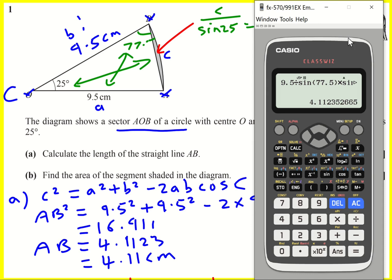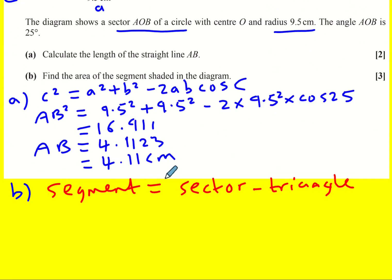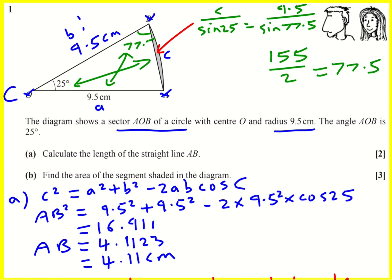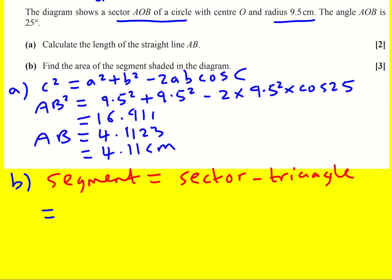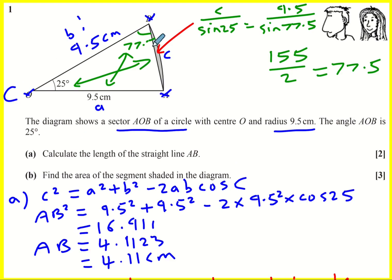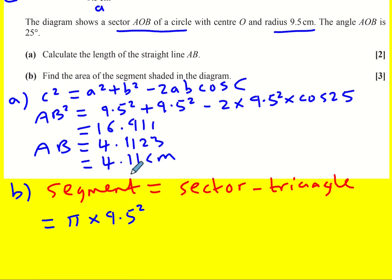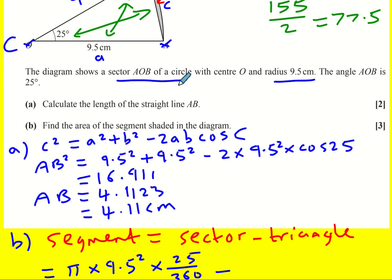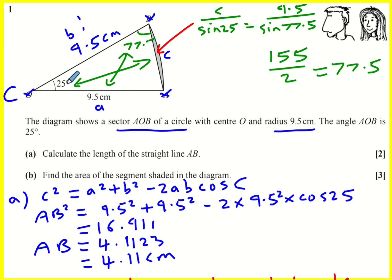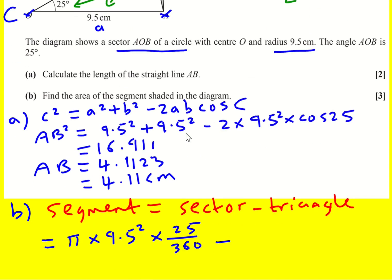Okay we get the same answer. Right, back to this part B, the area of the sector. Well a full circle is pi r squared, so it's going to be pi times 9.5 squared, but in this case we don't have a full circle, we've got 25 degrees of the 360 degrees, so we times by that fraction. Then we're going to minus the area of the triangle, which we've got two sides and the angle in between, we don't have a perpendicular height anywhere, so it's going to be a half ab sine c, or half times 9.5 squared times sine 25.